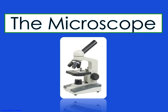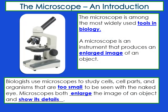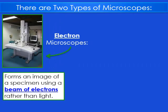Today we're going to talk about the microscope — the history, the different parts, and different kinds of microscopes. The microscope is among the most widely used tools in biology. It's an instrument that produces an enlarged image of an object. We're going to use the microscope to study cells, cell parts, and organisms that are too small to be seen with the naked eye.